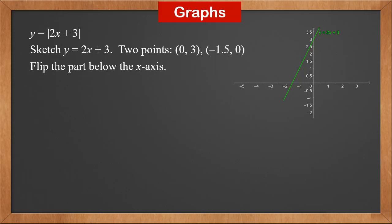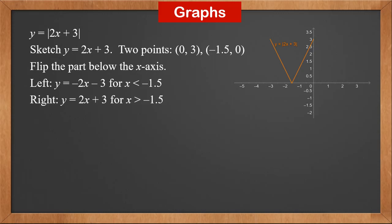Since modulus can never be negative, we flip the part below the x-axis. This gives the V-shaped graph of y = |2x + 3|. The left part is flipped up, so y values are negated: it's y = −2x − 3 for x less than −1.5. The right part is y = 2x + 3 for x greater than −1.5.